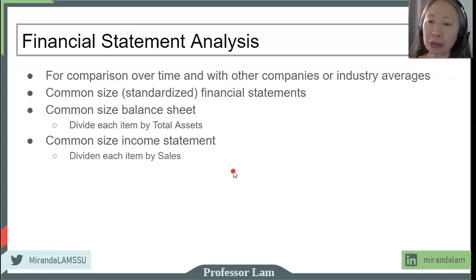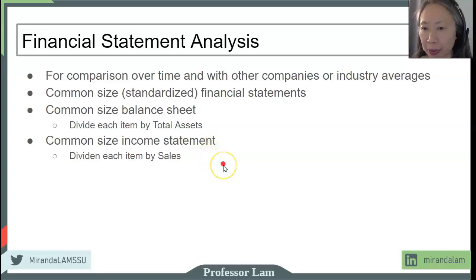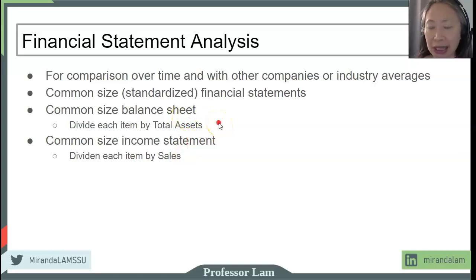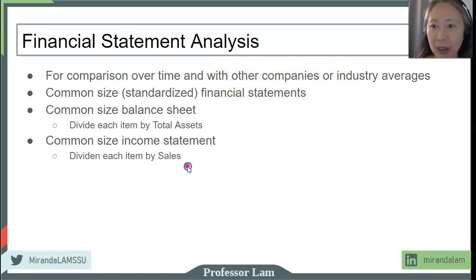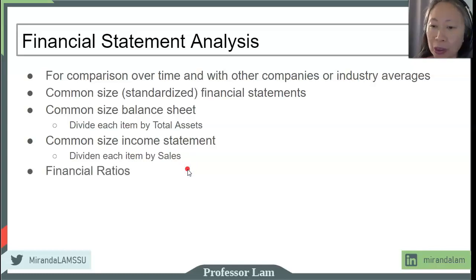These are the first steps in financial statement analysis. By converting the dollar values into percentages, it enables us to compare a company whose size has changed — growing or decreasing over time — and also against other companies of different sizes. Once we have a general idea of the overall health of the firm, we may want to dive in deeper, and to do that, we need to compute financial ratios.